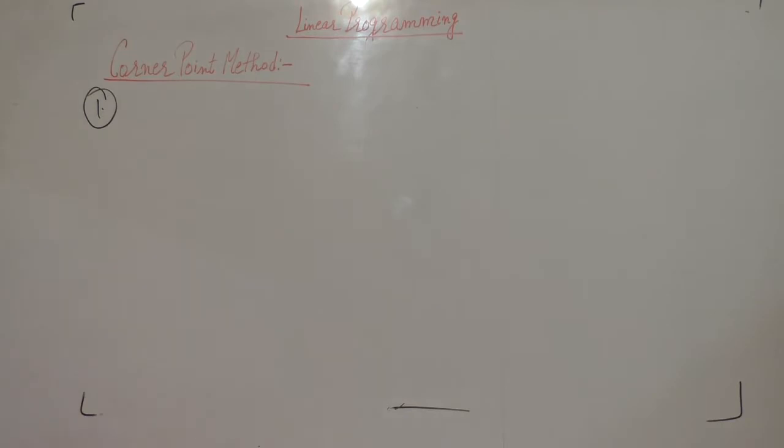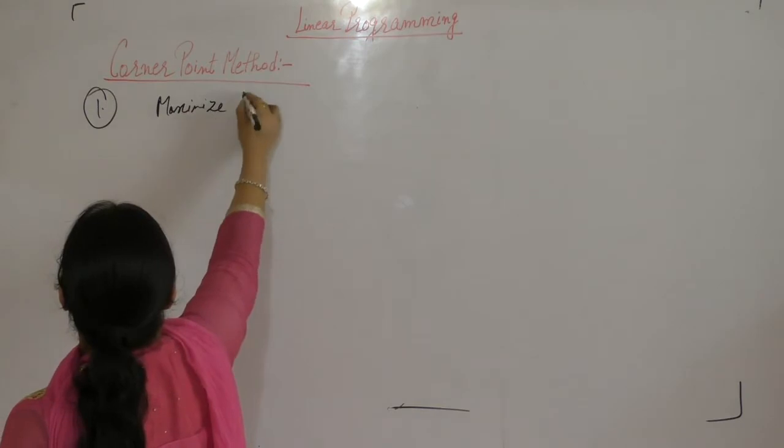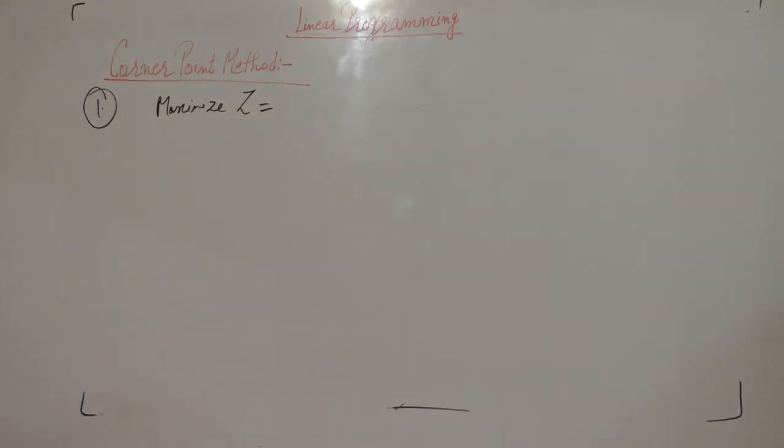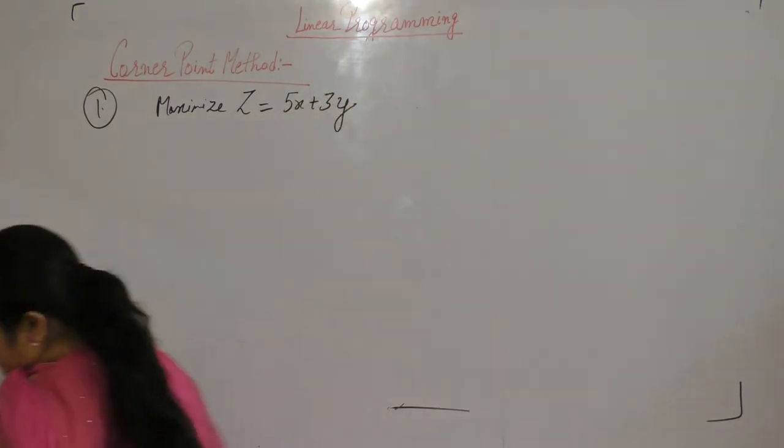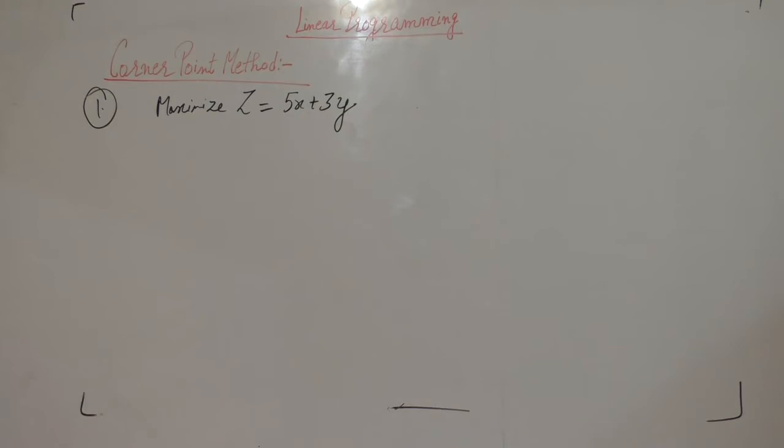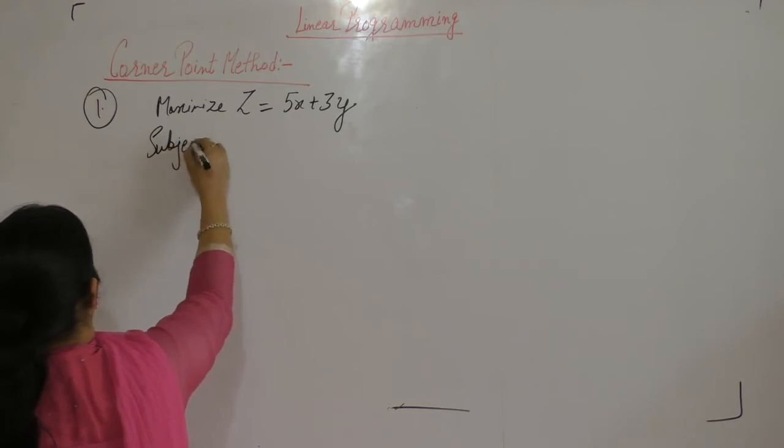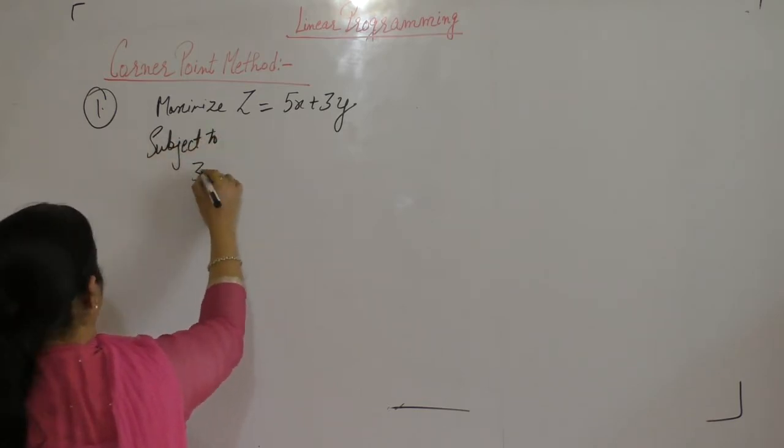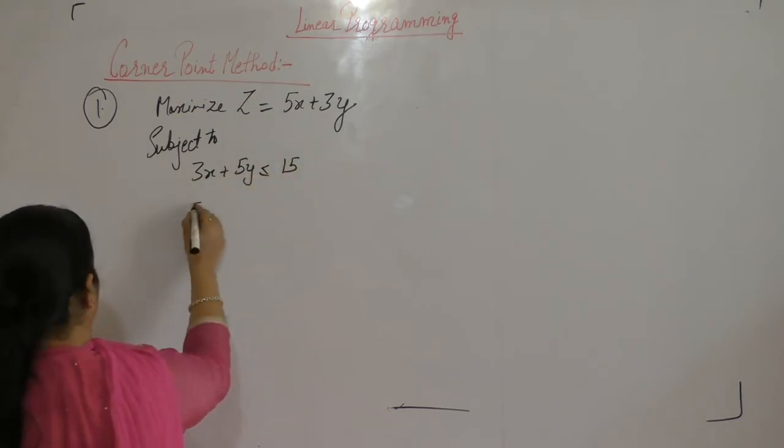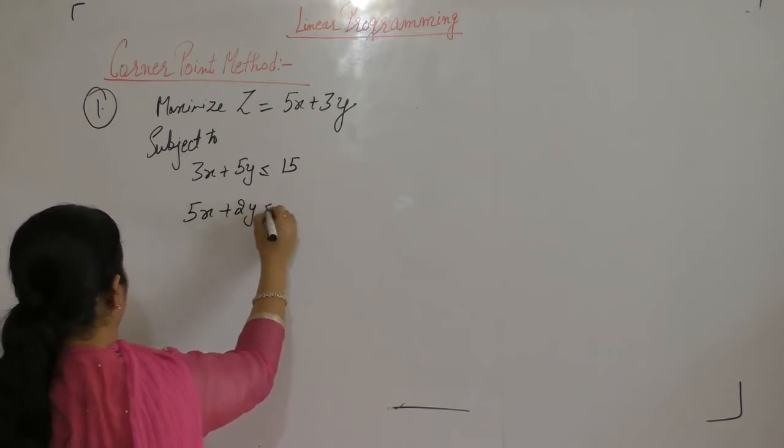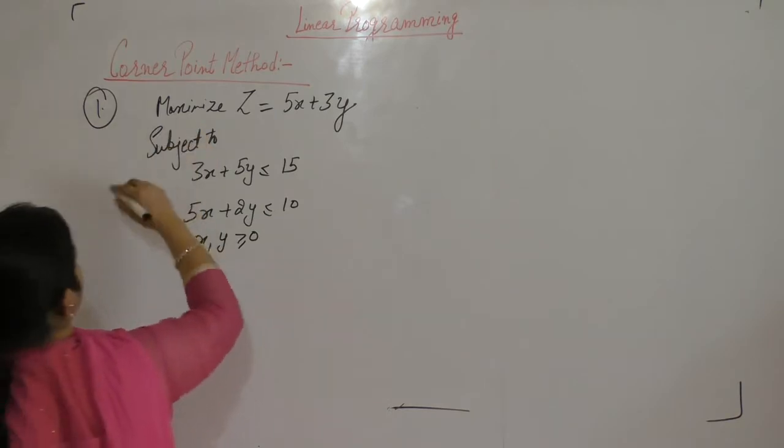Solve the following LPP. Maximize z equals 5x plus 3y, subject to 3x plus 5y less than or equal to 15, 5x plus 2y less than or equal to 10, and x, y greater than or equal to 0.